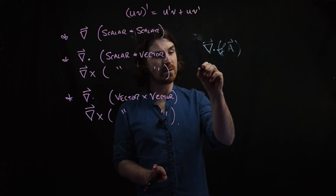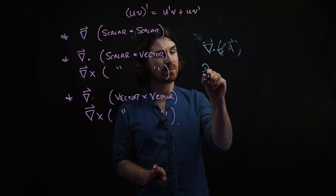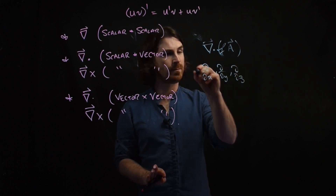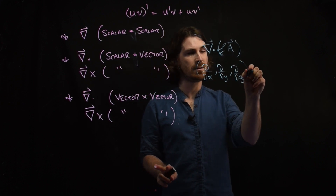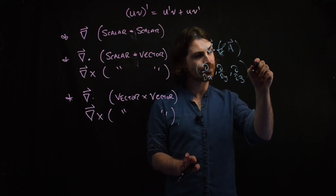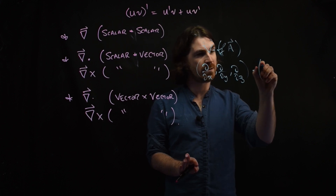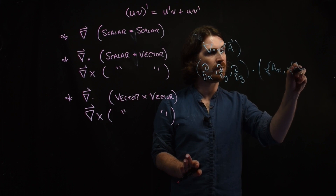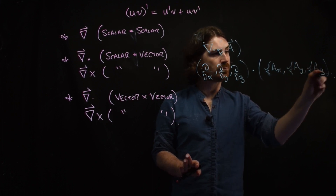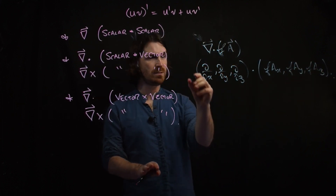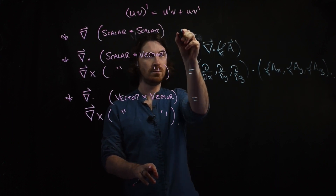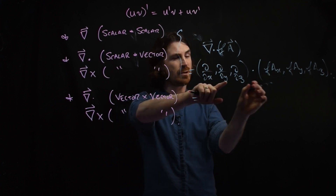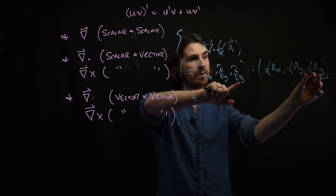What is our nabla operator? It's (d/dx, d/dy, d/dz). The divergence is basically the dot product of this with f times a. And what's f times a? It's (f·ax, f·ay, f·az). So this is equal to d/dx of (f·ax) plus d/dy of (f·ay) plus d/dz of (f·az).